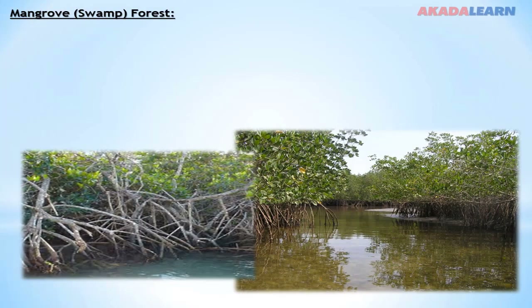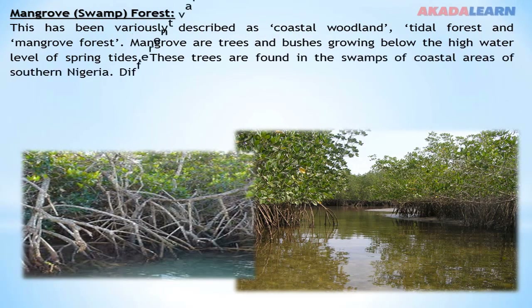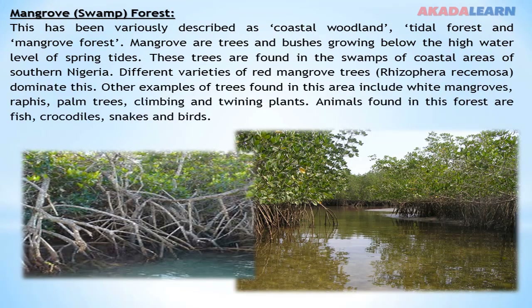Mangrove Swamp Forest has been variously described as a coastal wilderness, tidal forest, and mangrove forest. Mangroves are trees and bushes growing below the high water level of spring tides. These trees are found in the swamps of coastal areas of southern Nigeria. Different varieties of red mangrove trees (Rhizophora racemosa) dominate this area. Other examples include white mangroves, raffia palm trees, and climbing and twining plants. Animals found in this forest include fish, crocodiles, snakes and birds.